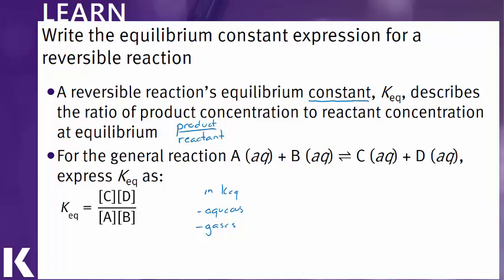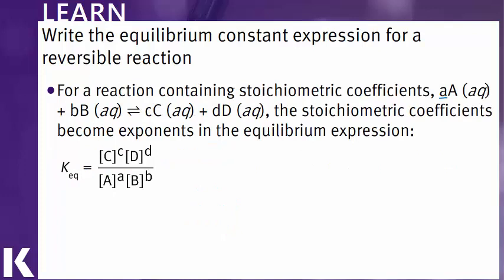In this particular reaction, or example reaction, all of our coefficients were one. But let's take a look at how this changes when we have other values for our coefficients. Here we have coefficients of A, B, C, and D. And to write this equilibrium constant, we still do the ratio of products over reactants. But notice our exponents in our Keq expression are the coefficients from this balanced chemical reaction.